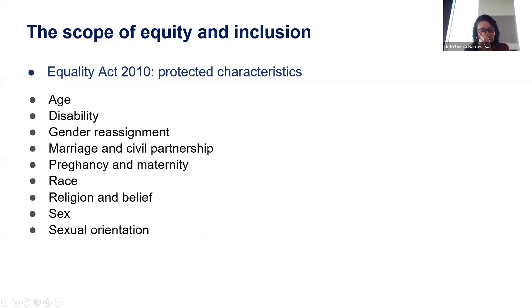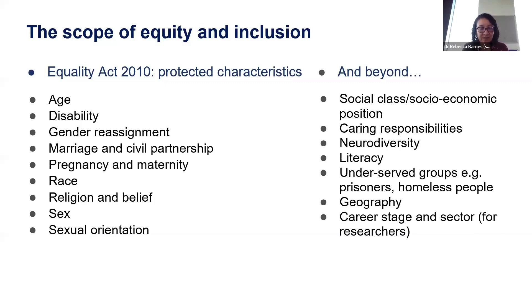The first area to address is the scope of what we mean by equity and inclusion. Equity and inclusion are sometimes restricted to the protected characteristics in the Equality Act, but in addition to those nine protected characteristics, there are other areas particularly relevant for the NIHR — the largest funder of health and care research in the UK. These include social class and socioeconomic position, caring responsibilities, neurodiversity, literacy, and underserved groups: those particularly marginalized, disadvantaged, or discriminated against, including prisoners, traveler communities, homeless people, and asylum seekers and refugees.